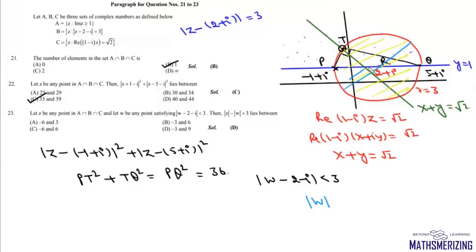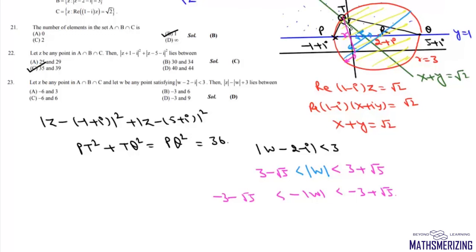Now this distance from origin to 2 plus iota is root 5. Now this is minimum distance so it will be 3 minus root 5 and its maximum distance will be root 5 plus 3 so it will be 3 plus root 5.